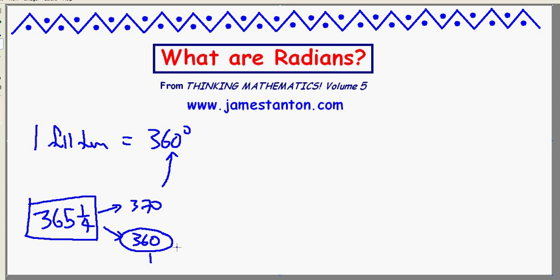For example, 360 is divisible by 2, by 3, by 4, by 5, by 6, not by 7, but is divisible by 8, by 9, by 10, by 12, 15, all sorts of things. 370 does not have many factors.